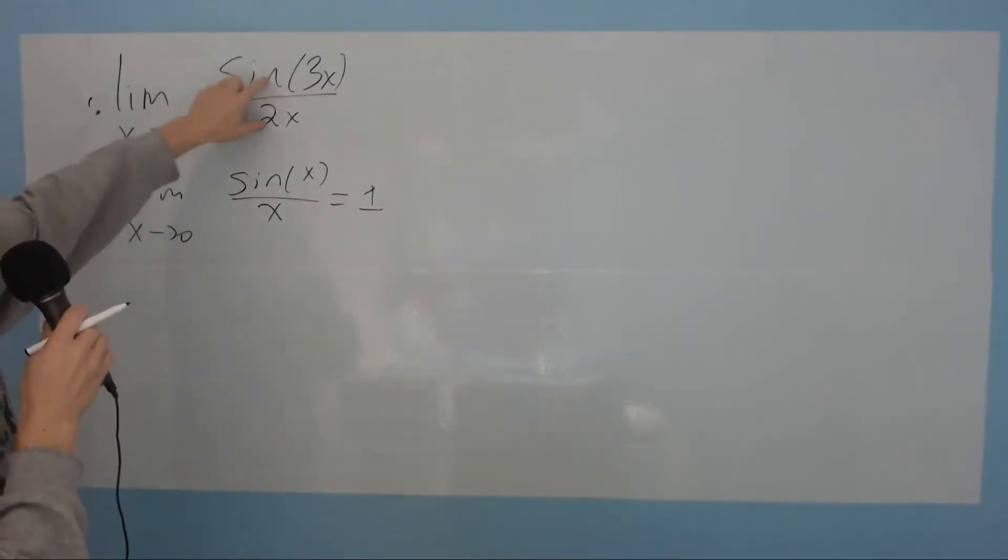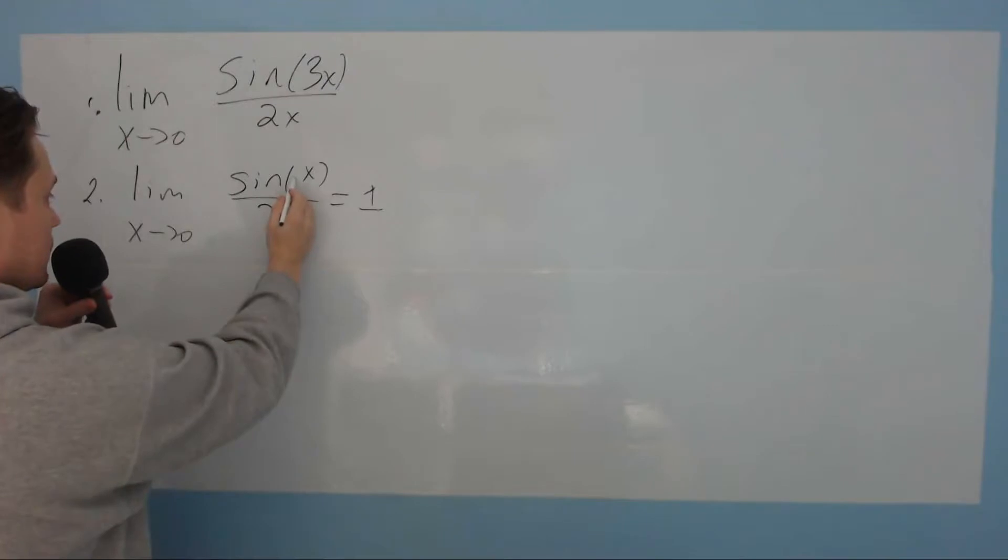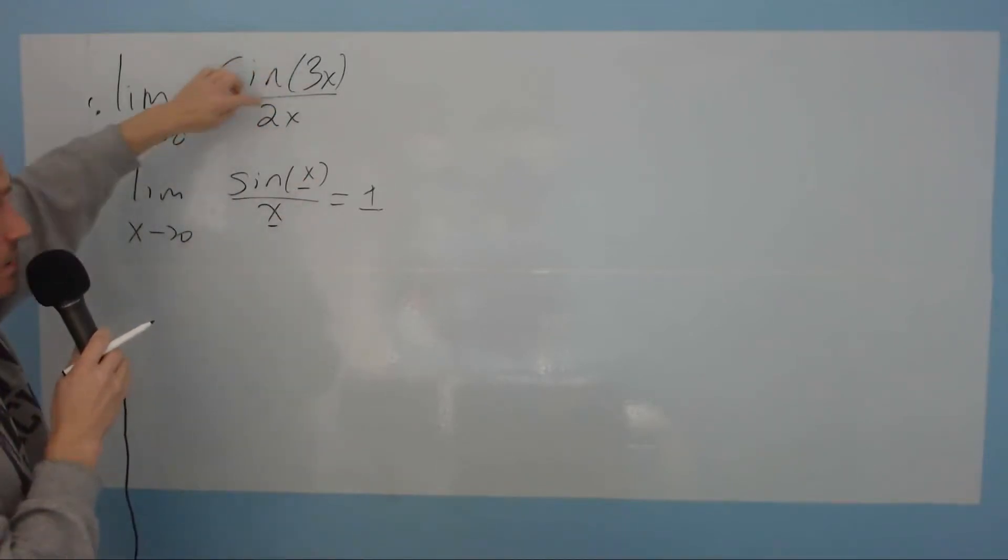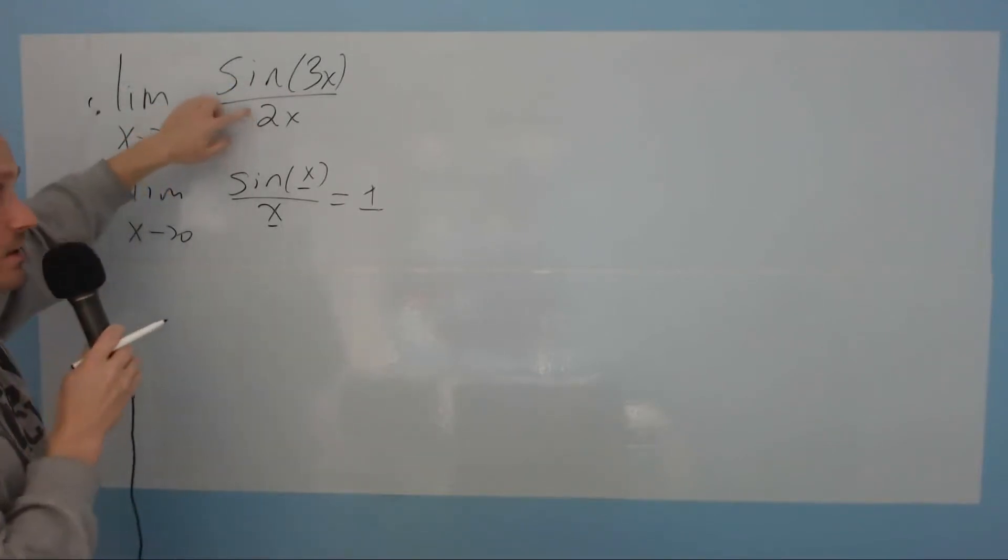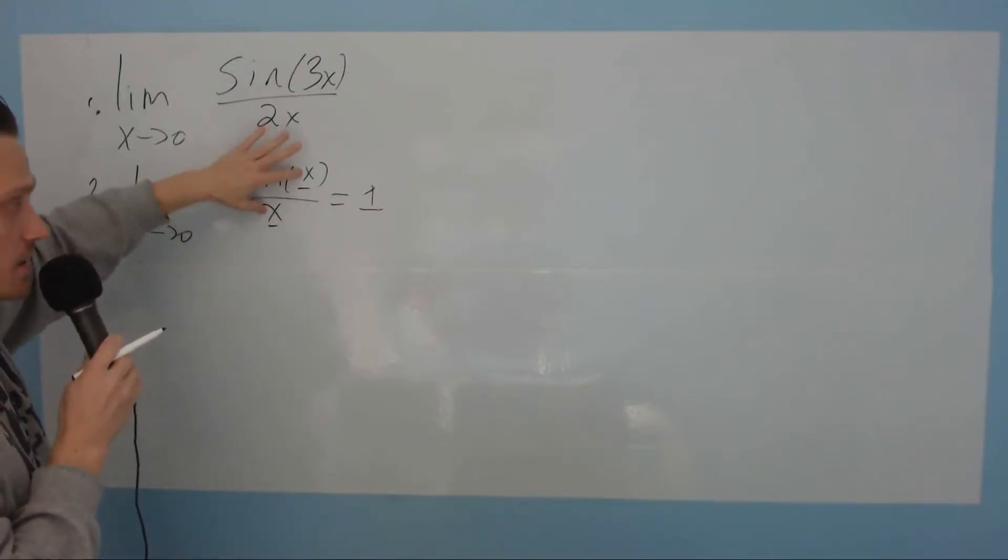Notice that our limit says sine of 3x over 2x. This basic limit says sine of x over x. In a previous video, I showed that you need this piece and this piece to be the same. Then this limit is always equal to 1. In our case, we have 3 as a constant and 2 as a constant. These are not the same values. Our goal would be to try to rewrite this limit so it can form this basic shape, so that this and this are the same.